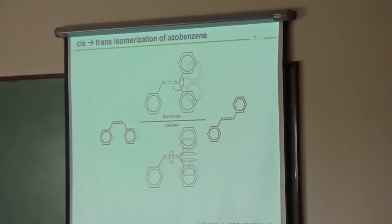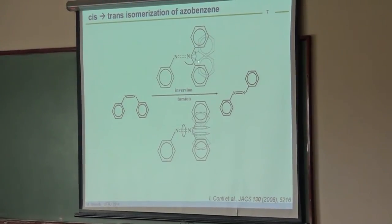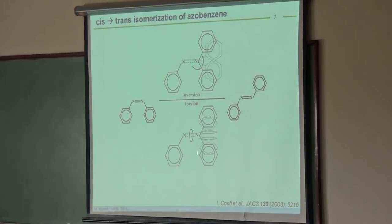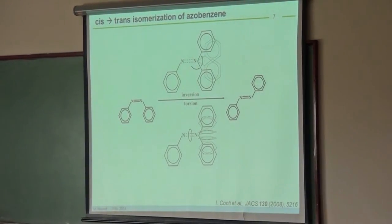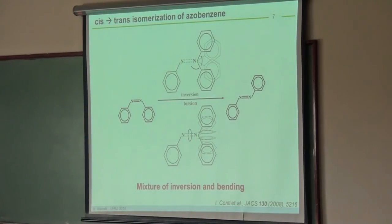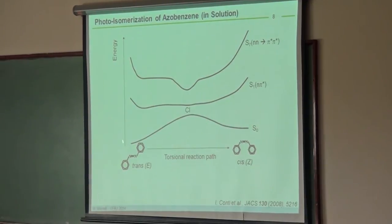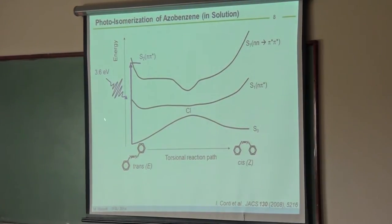For azobenzene, the cis-trans motion is a hula-hoop motion — a combination of inversion within the plane and torsion. Theory tells us it's a mixture of inversion and bending. Looking at the potential energy surfaces: the trans state is lower in energy than the cis state, with a barrier in between. Normally, molecules in the cis state will overcome this barrier and end in the stable trans state.